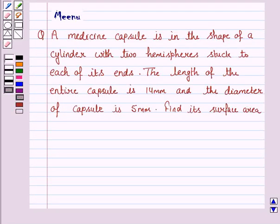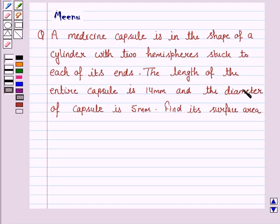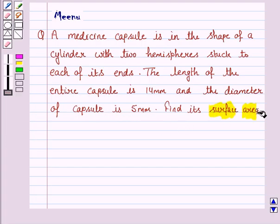Hello and welcome to the session. Let's discuss the following question. A medicine capsule is in the shape of a cylinder with two hemispheres stuck to each of its ends. The length of the entire capsule is 14 mm and the diameter of the capsule is 5 mm. Find its surface area.